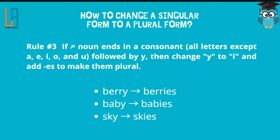Rule number three: if a noun ends in a consonant — meaning any letter except A, E, I, O, and U — followed by Y, then change Y to I and add ES to make them plural. For example, the last letters are R and Y, so you change Y to I and add ES. Berry becomes berries, baby becomes babies, sky becomes skies. You don't just add ES — you have to change the letter Y to I and then add ES.